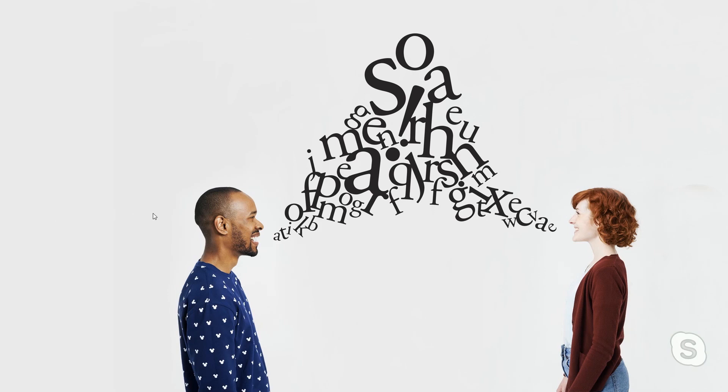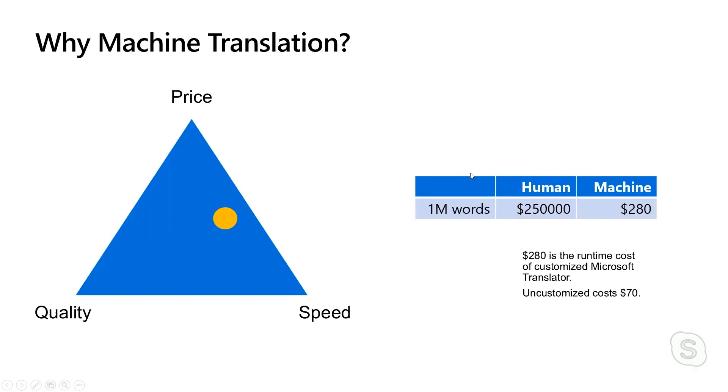Automating translation is really cheap — about a factor of a thousand cheaper than human translation, so you can do a lot more with it. It is infinitely faster. It is, however, not as good. There's a difference between languages. The most translated languages of the world — generally the top 20, including French, German, Italian, Spanish, Chinese, Japanese, Portuguese, and more — they translate really well.